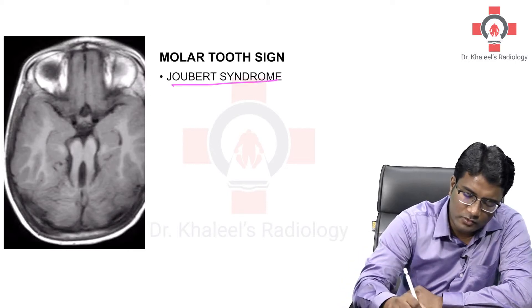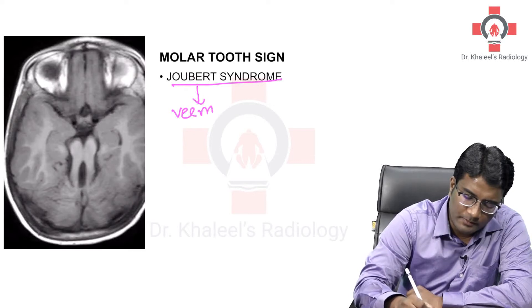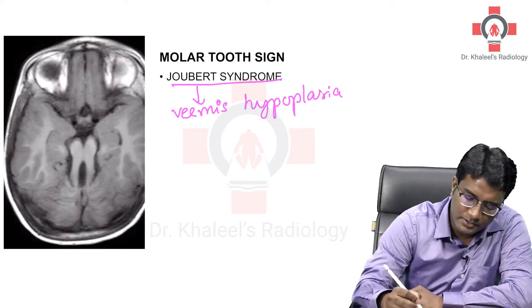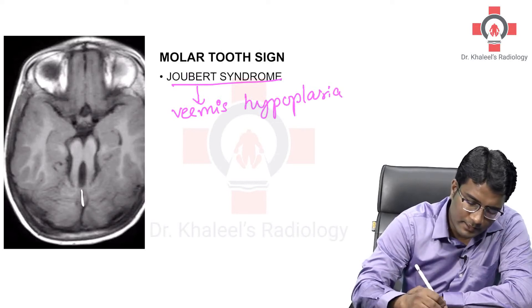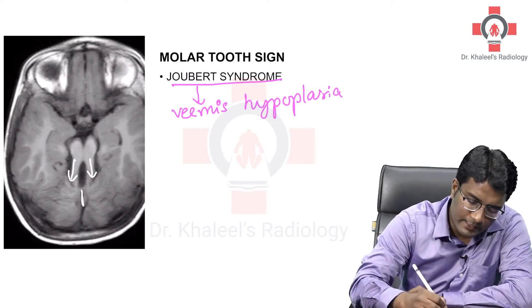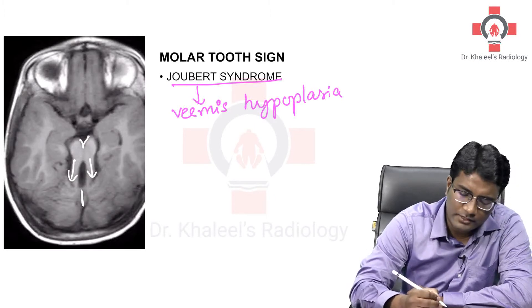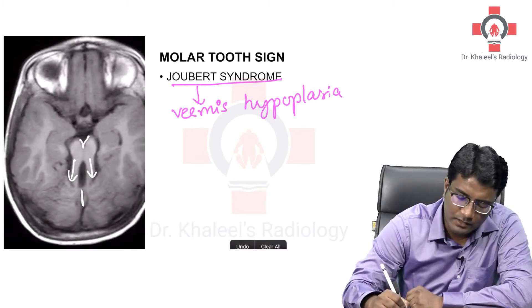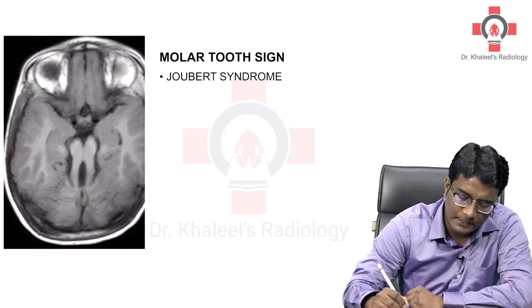We need to understand what is Joubert syndrome. Joubert syndrome is vermis hypoplasia. Whenever there is vermis hypoplasia, the cerebellar vermis is hypoplastic. There will be elongated cerebellar peduncles, and along with the interpeduncular fossa, it gives the appearance of a molar tooth sign.